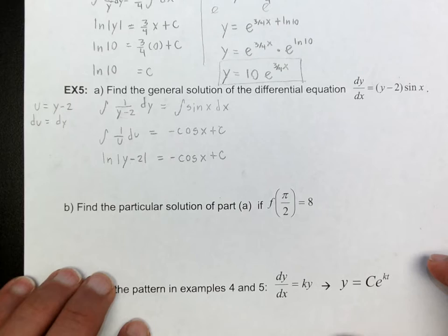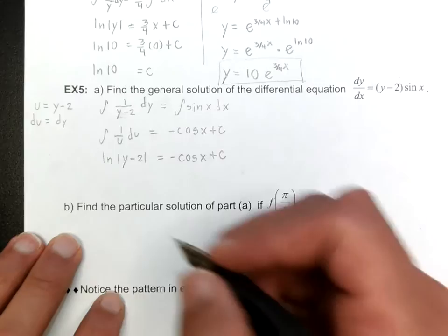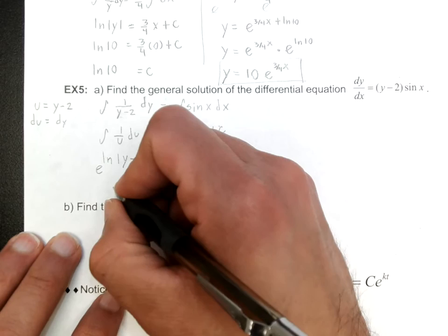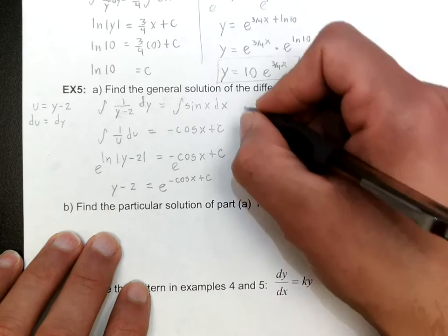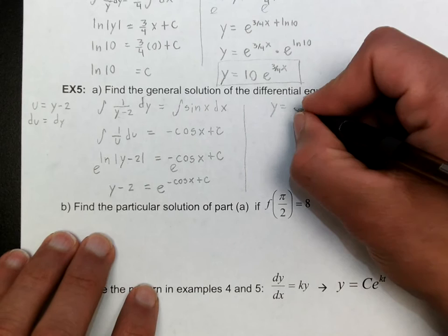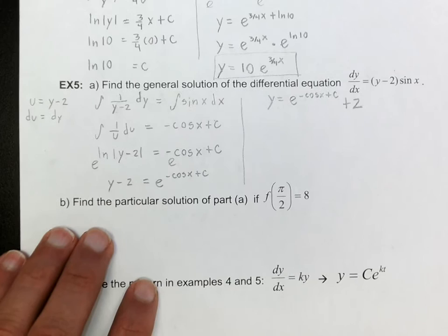To get y by itself, I'm going to use Euler's number again. Raising e to both sides gives y minus 2 equals e to the negative cosine x plus c. Therefore y equals e to the negative cosine x plus c, plus 2.